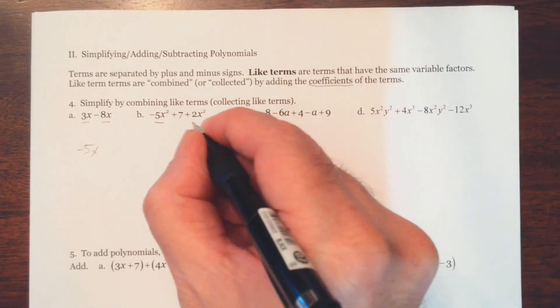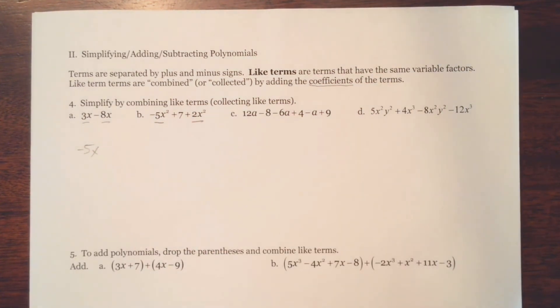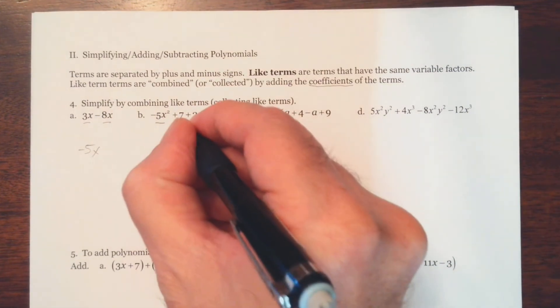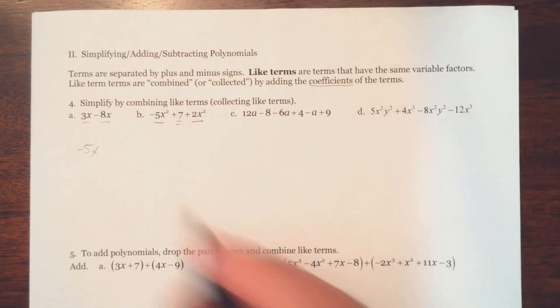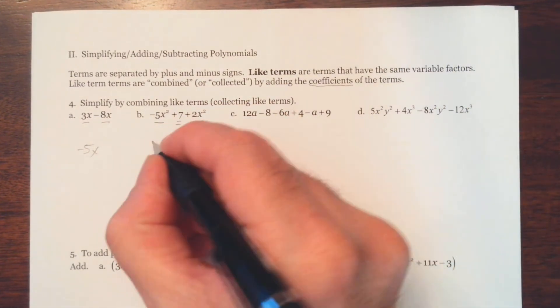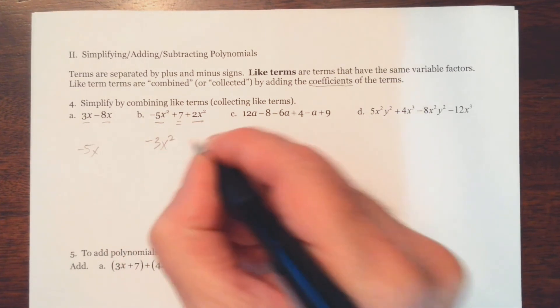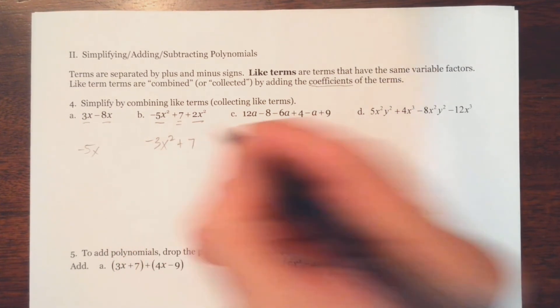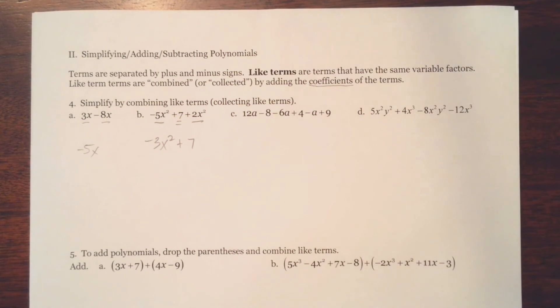Notice here you have two like terms, your x squared terms. And then you have a constant term. And so negative 5x squared and 2x squared is negative 3x squared. And then don't forget to write the plus 7. And so that would be our solution there, our answer.